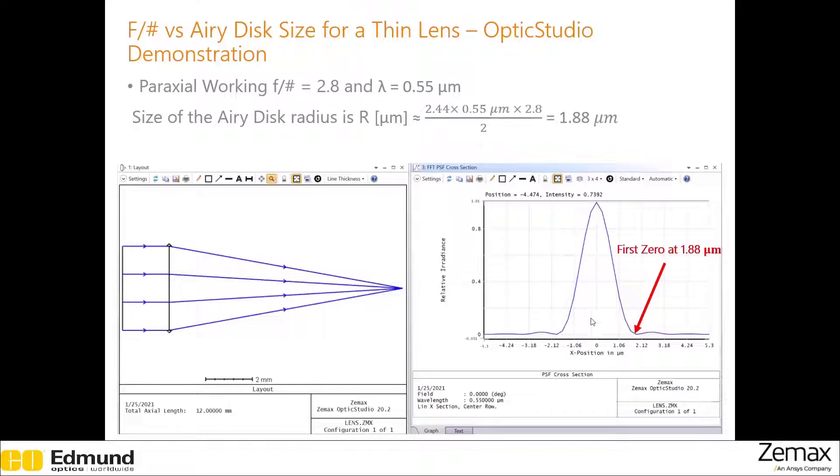This is precisely what is shown here. Notice the first zero can be seen here at 1.88 microns. This is the Airy radius.